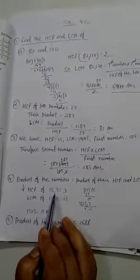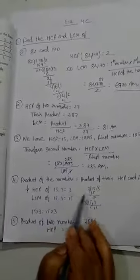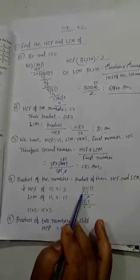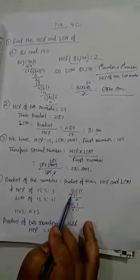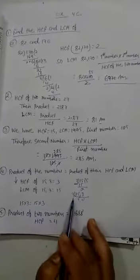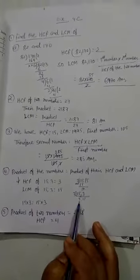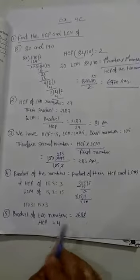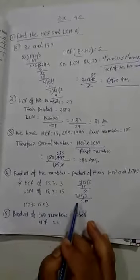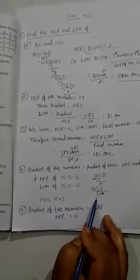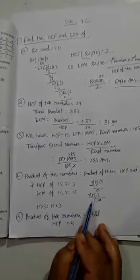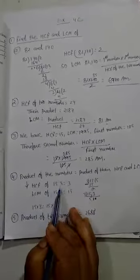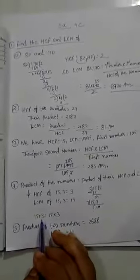HCF of 15 and 3, what will we get? 3, 3, 3, 5 for 15. It means this is HCF. LCM of 15 and 3, so we do LCM: 3, 5, and 3, 1. So this will be 3, 5, which means LCM is 15.